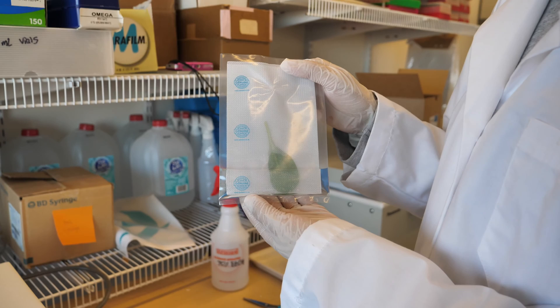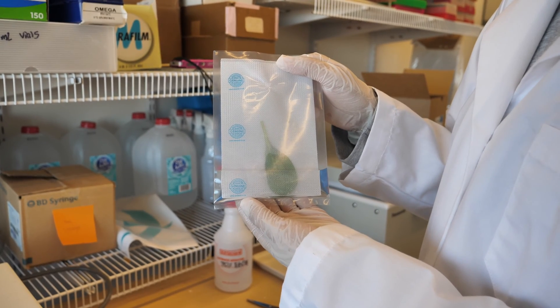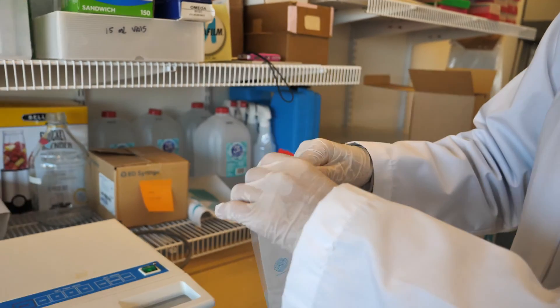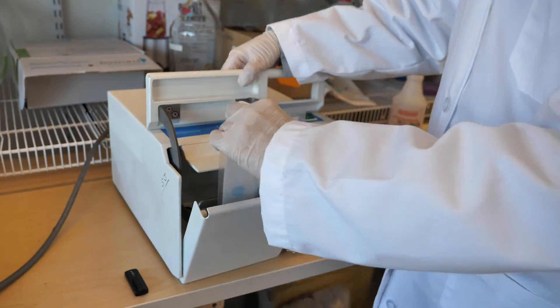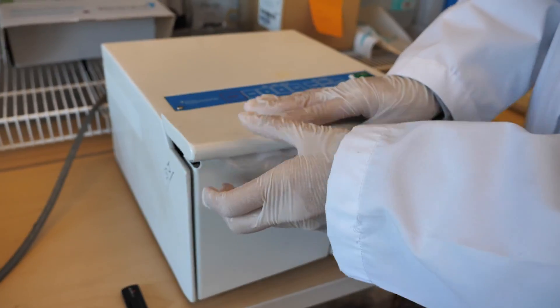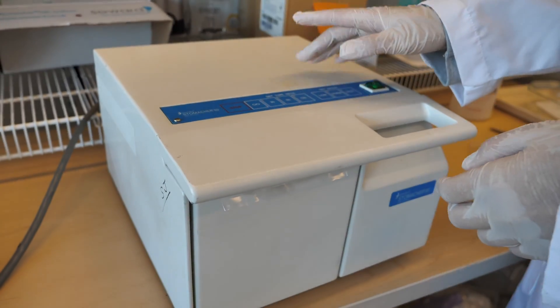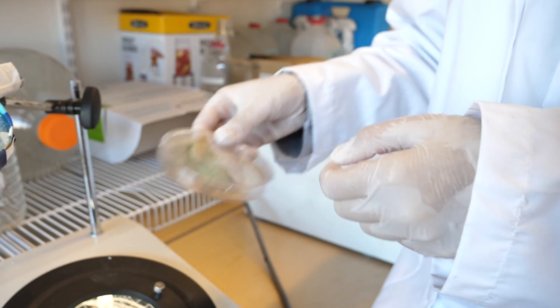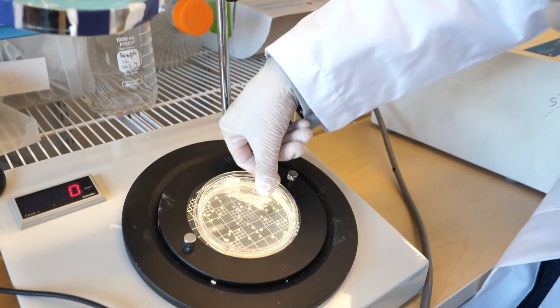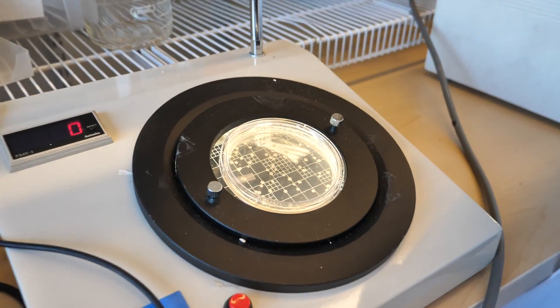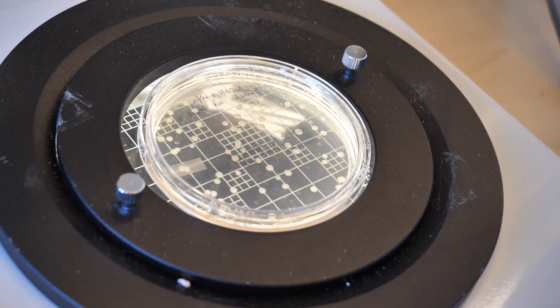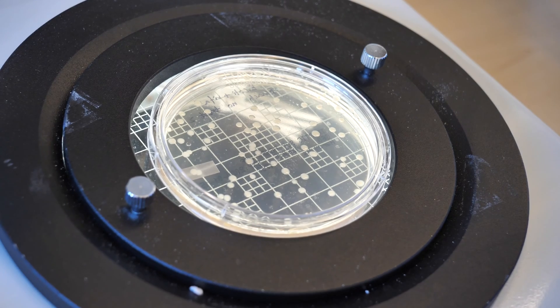We put the treated leaves in a stomacher bag with PBS and then we put it into the stomacher and turn it on for two minutes. We take 500-microliter of PBS solution on the plate and then incubate for 24 hours. Now, we are counting the CFUs on the plate.